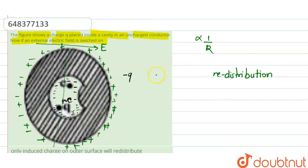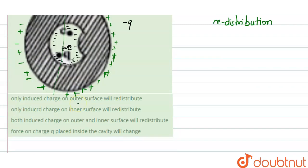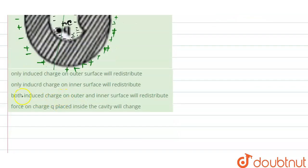So we can say: when the electric field is applied on this conductor, the outer surface charges will redistribute and the inner surface will remain as it is. Checking the options, the correct option is option A — only the induced charge on the outer surface will redistribute. Thank you.